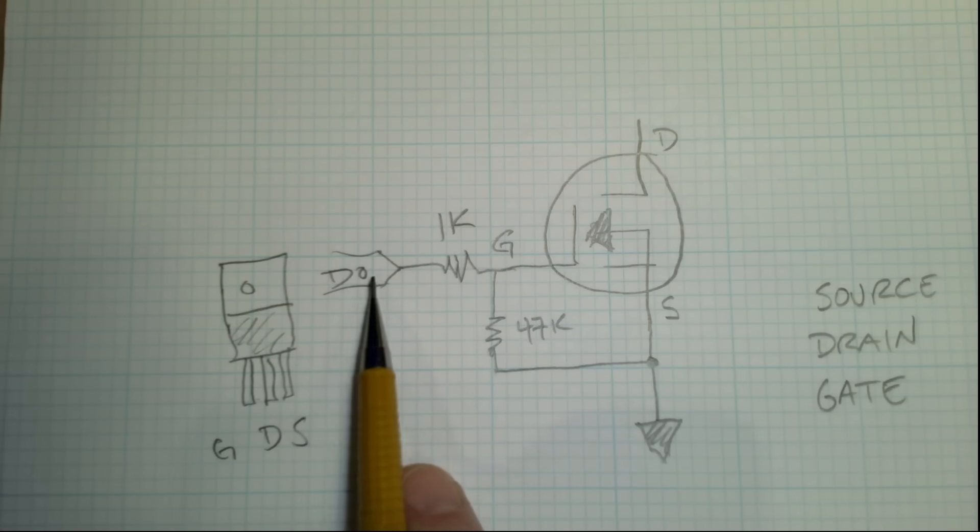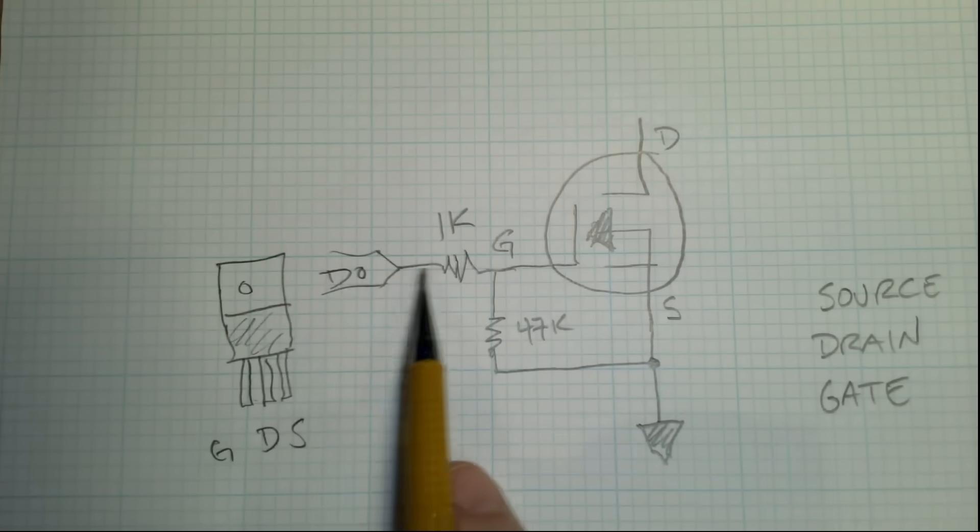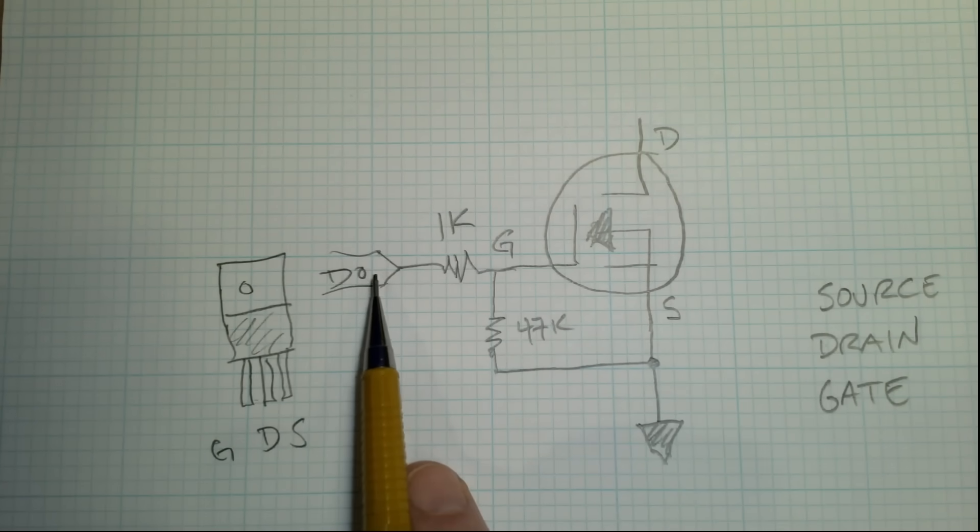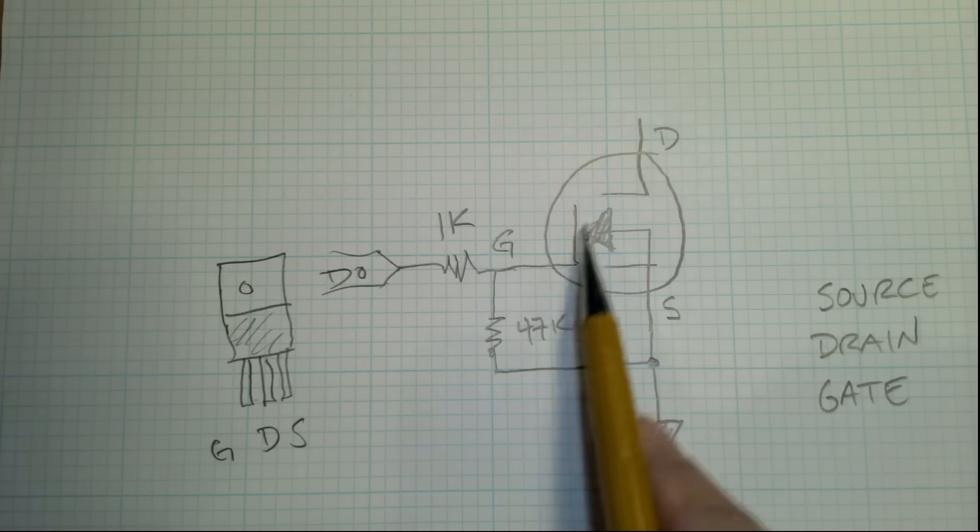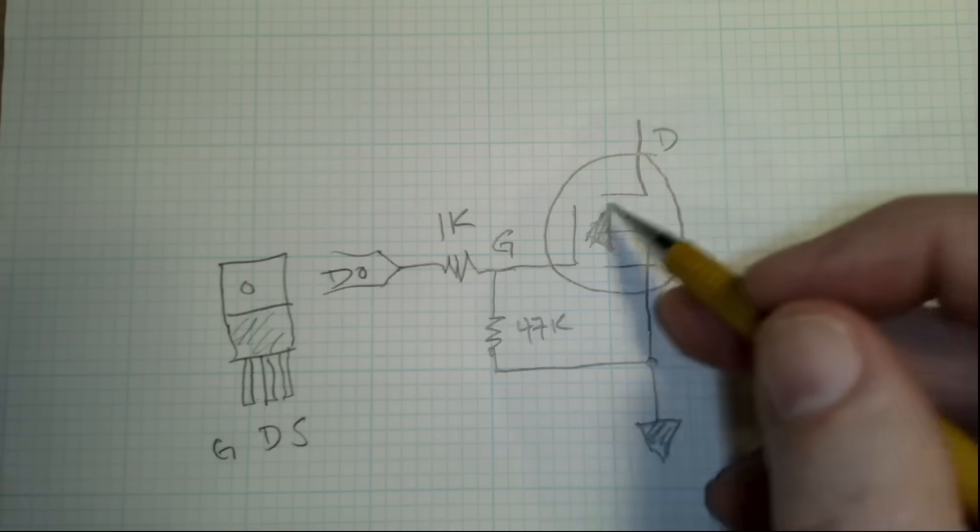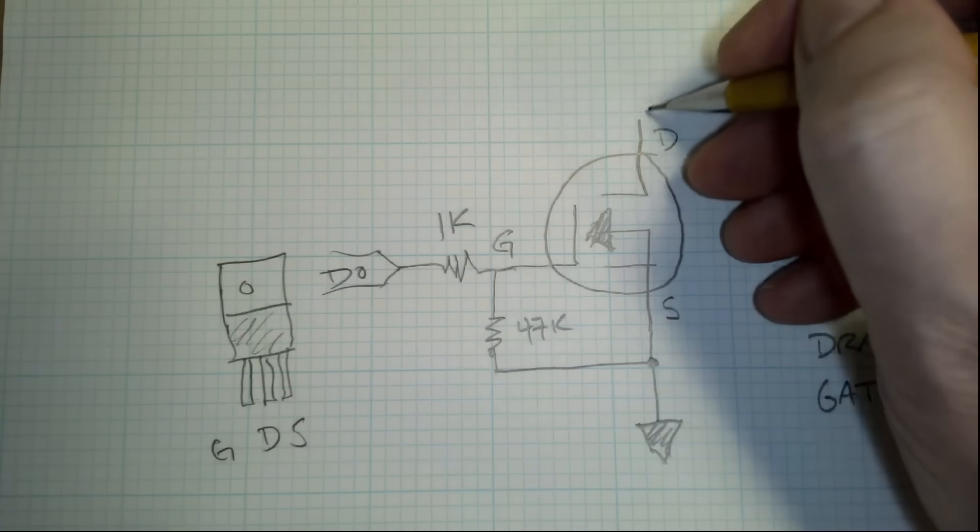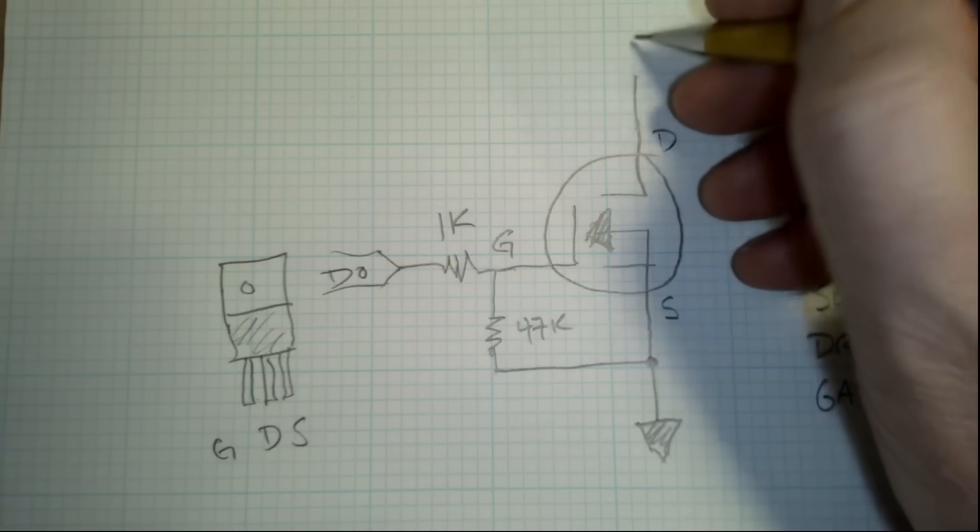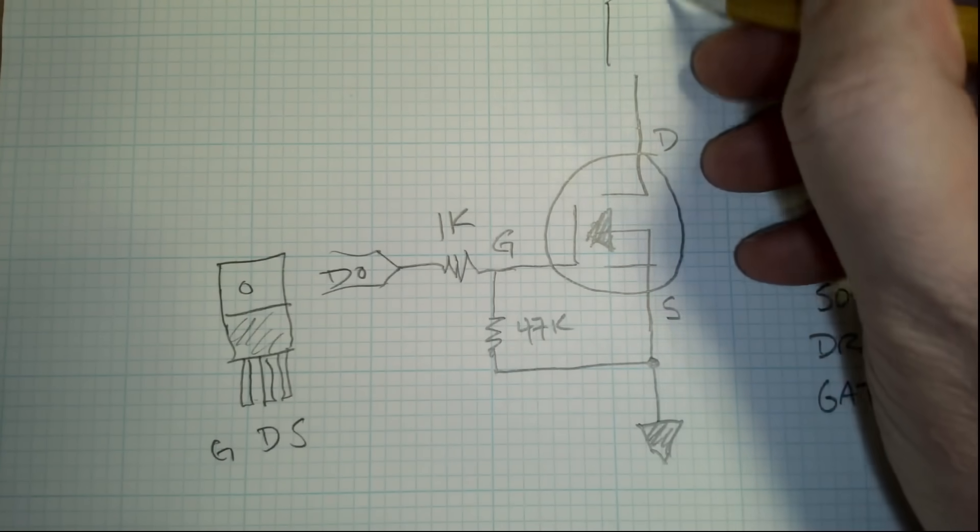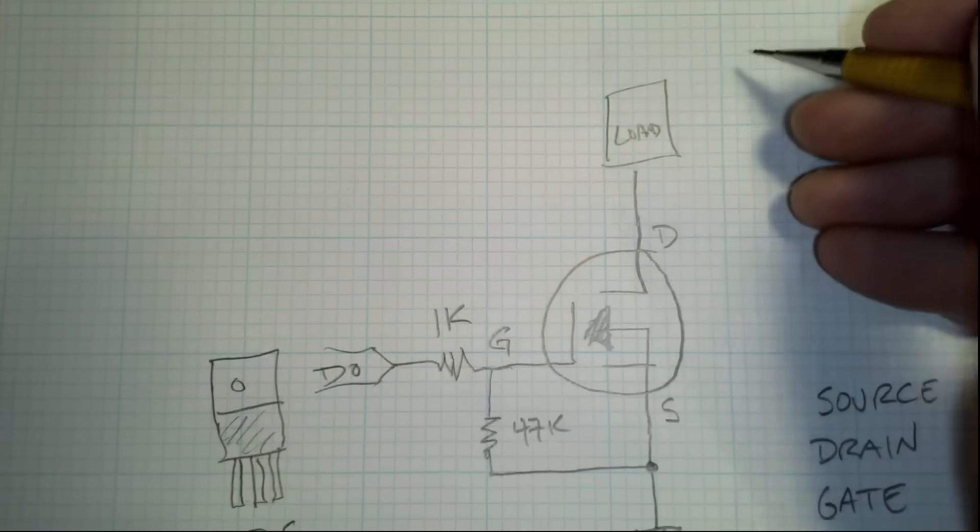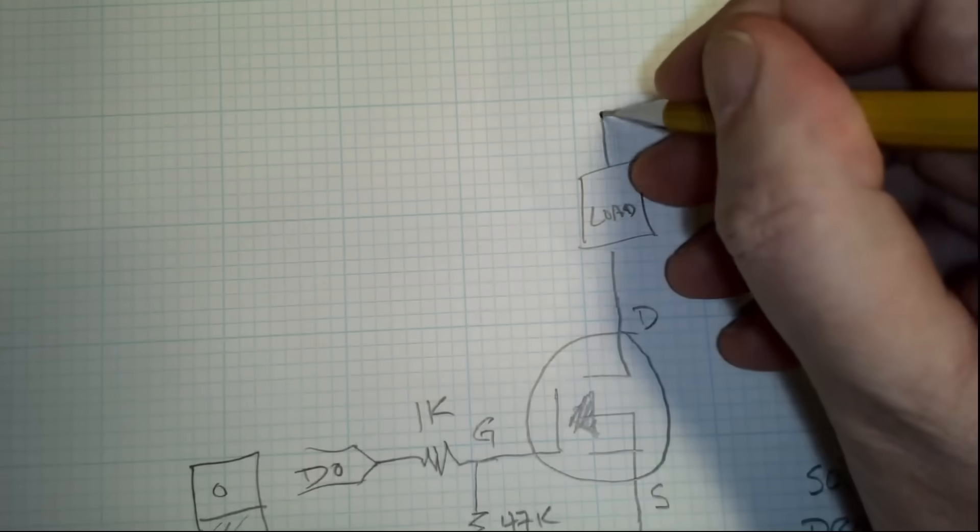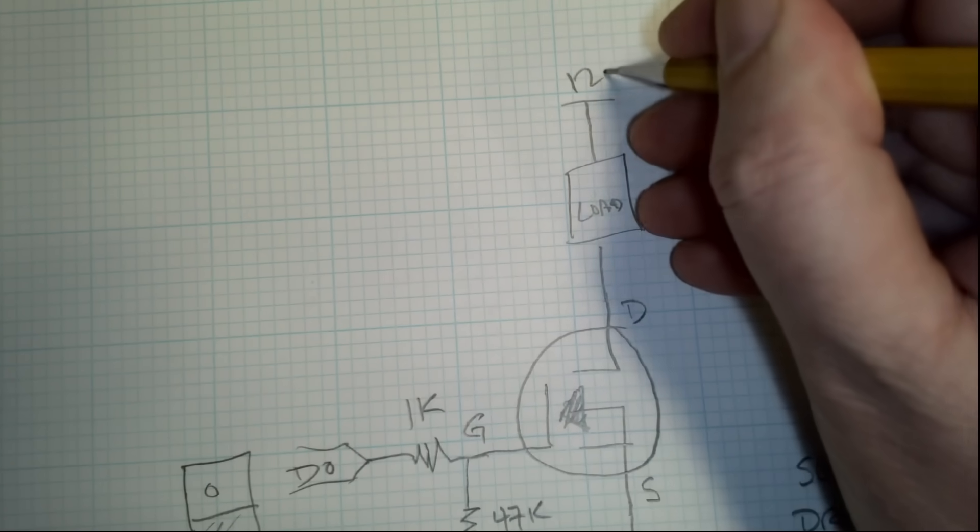And then when we power this, when we energize this from our output, and this can be 3.3 or 5 volts, it's going to activate this transistor, which is going to close this and allow current to flow through it. So then all we have to do is take this, hook this up to whatever we're trying to control, our load, and then run that to our 12 volt system.